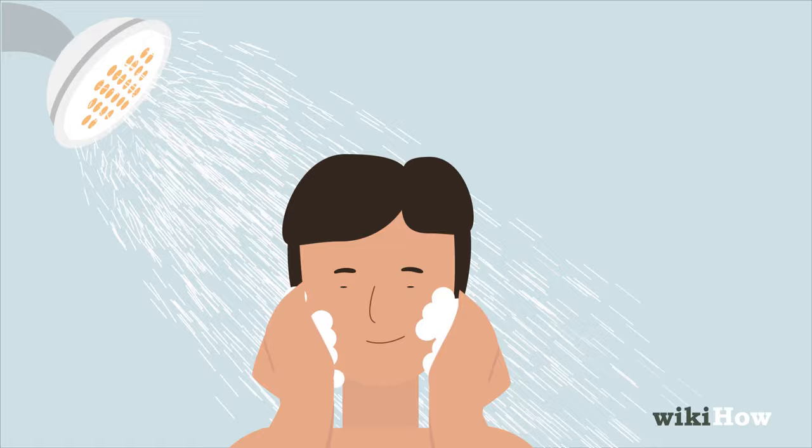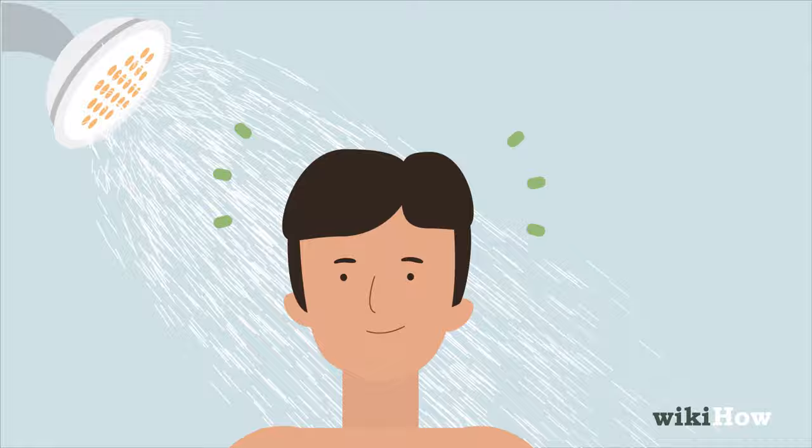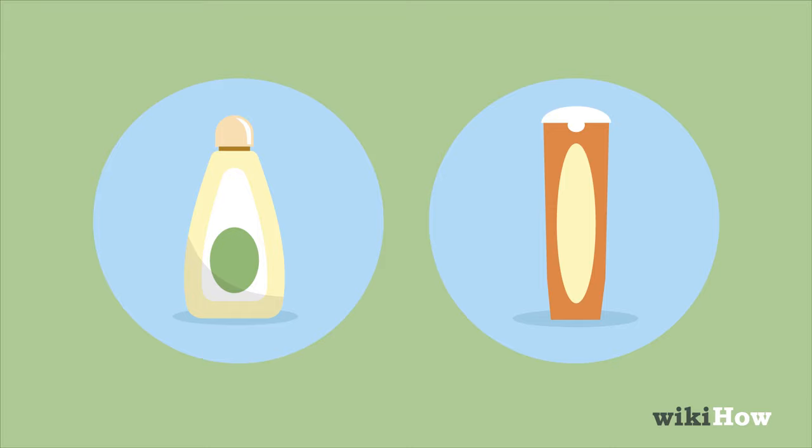If you want to wash your hair, wet it entirely and then apply shampoo and conditioner. Make sure to rinse the shampoo out of your hair before adding the conditioner.